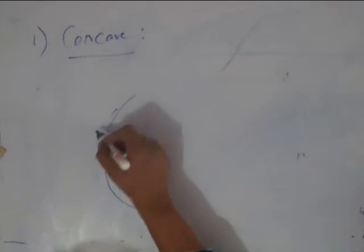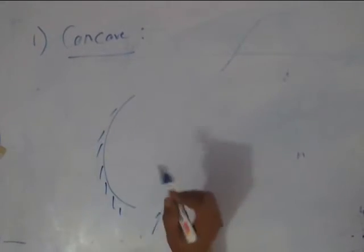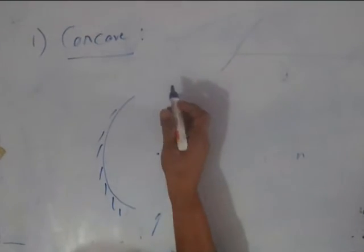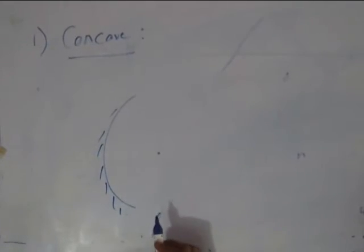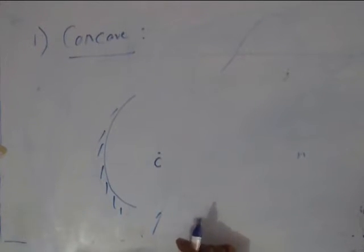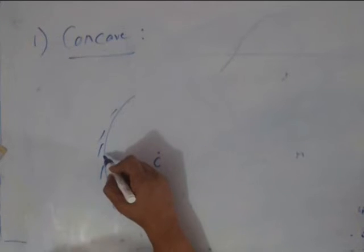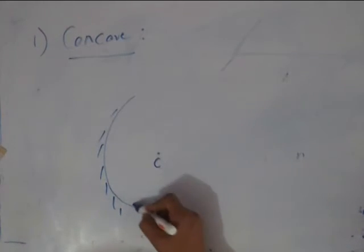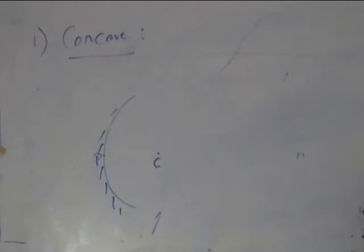For a concave mirror, the center of the sphere of which the concave mirror is a part is called center of curvature for the obvious reason. The exact geometrical center of the whole mirror is called the pole and represented as P.